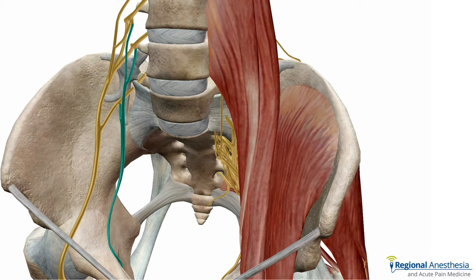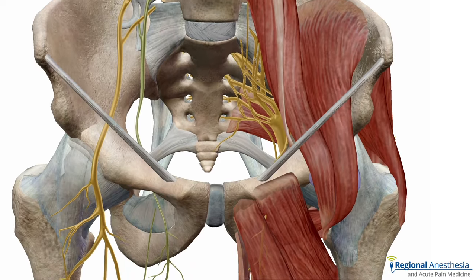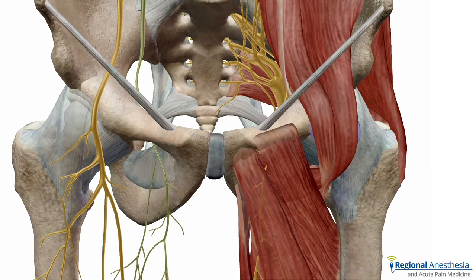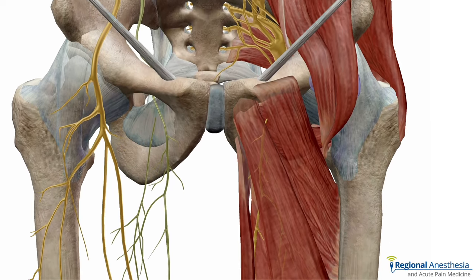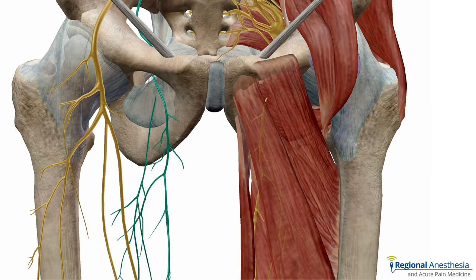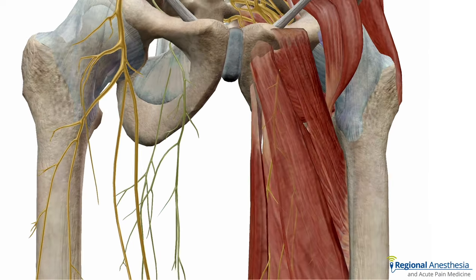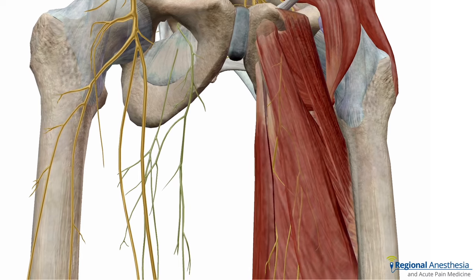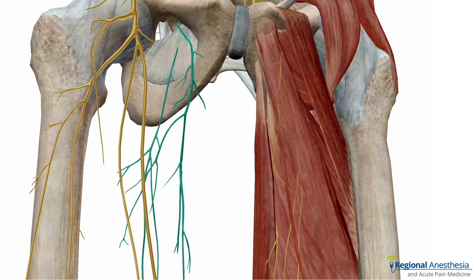The obturator nerve is a branch of the lumbar plexus and originates from the roots of L2, L3, and L4. It passes through the substance of the psoas muscle before emerging on the medial side of psoas. It then passes through the obturator canal into the thigh, splitting as it does into an anterior and posterior branch.